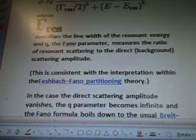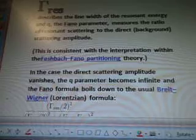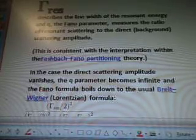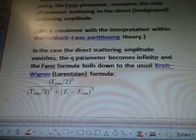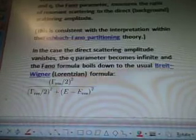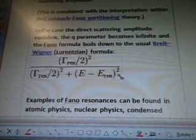This is consistent with the interpretation within the Feshbach-Fano Partitioning Theory. This is a long video, just so you know. I'll go through all this and then I'll go through the formula. In the case the direct scattering amplitude vanishes, the Q parameter becomes infinite, and the Fano formula boils down to the Breit-Wigner-Lorentzian formula, which is this one.